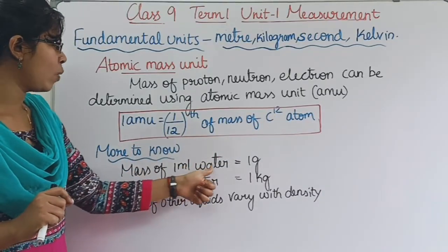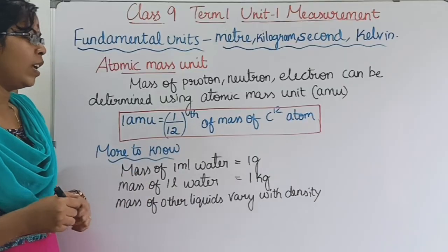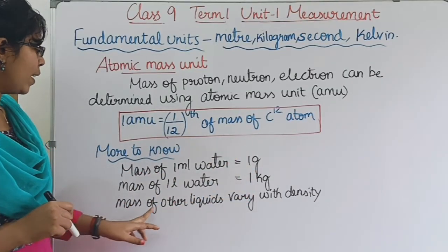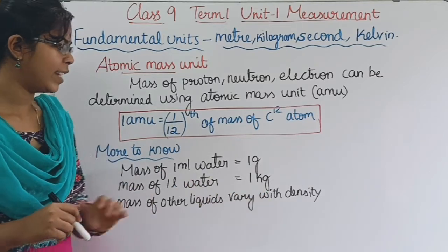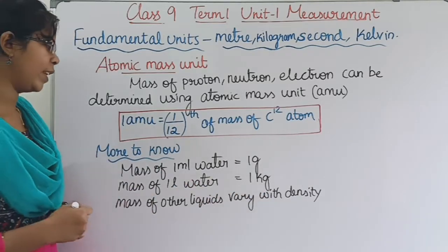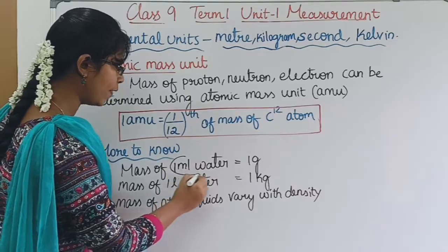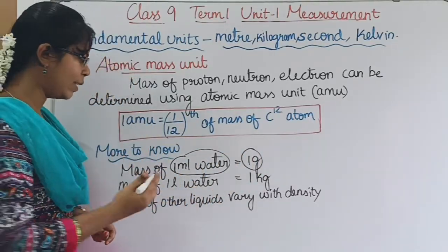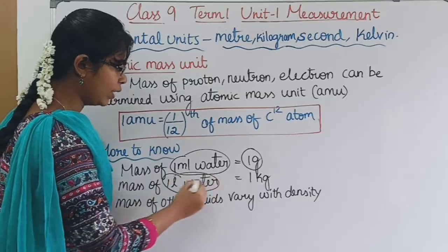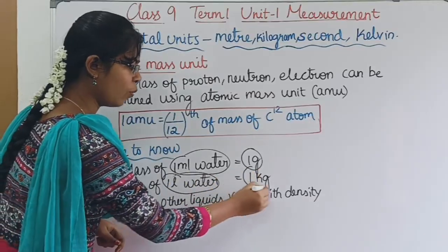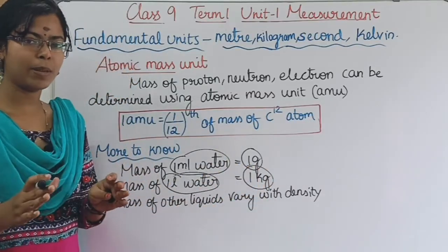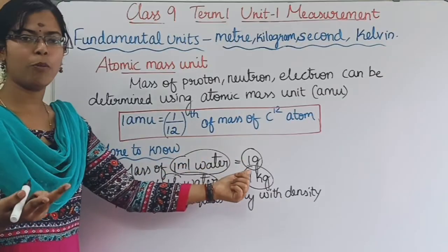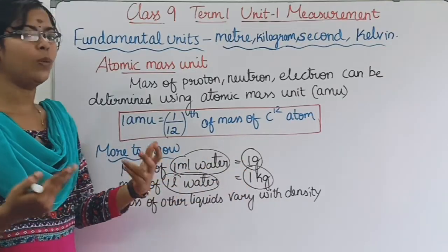More to know: mass of 1 ml of water is equal to 1 gram. Mass of 1 liter of water is equal to 1 kilogram. Mass of other liquids varies with density.